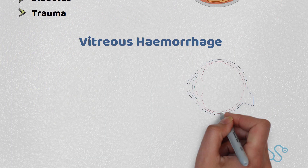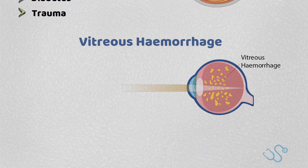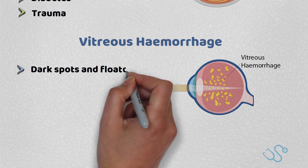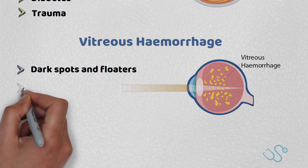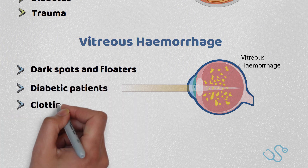Vitreous hemorrhages, as mentioned, may lead on to retinal detachment, with patients often complaining of dark spots and floaters. Again, it's commonly seen in diabetic patients or those with clotting irregularities.